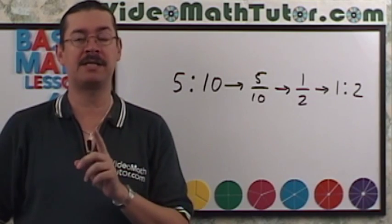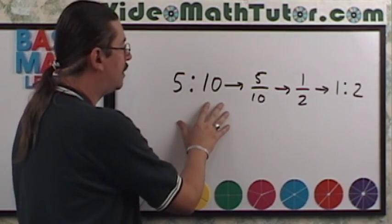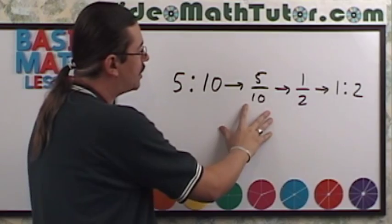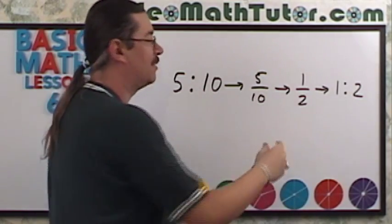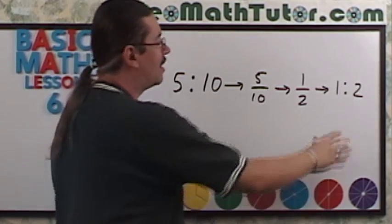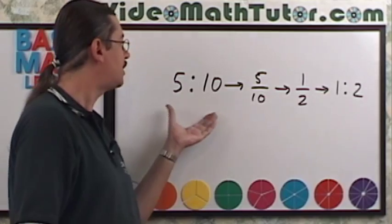Ratios are always expressed in lowest terms. So something like this, 5 to 10. Well, temporarily write it like a fraction, 5 tenths. Reduce your fraction. Half, but really we don't want to say half. So this becomes 1 to 2. And this is a proper way of expressing this ratio right here.